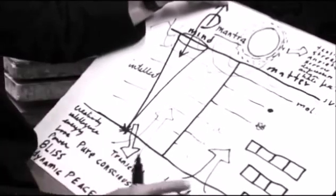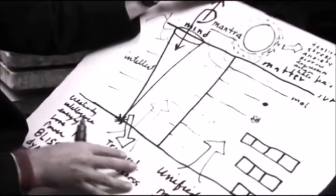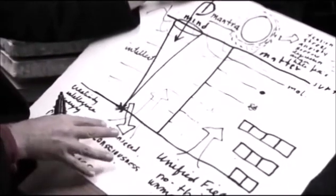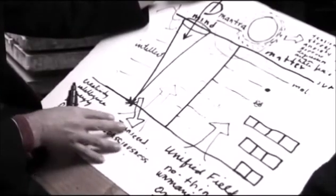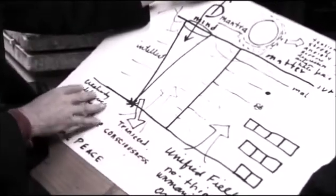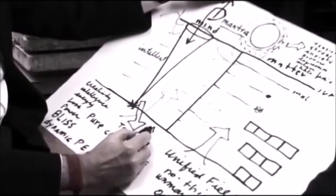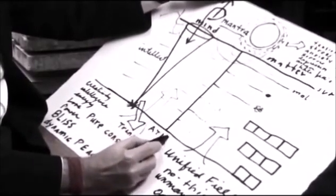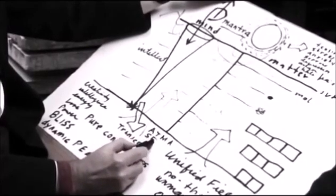And you experience this field when you really get there and transcend. This is transcendental consciousness. There's so many names for this field: the Tao, Kingdom of Heaven, the absolute, totality. In Vedic language, this field is called Atma, A-T-M-A, means the self with a capital S.